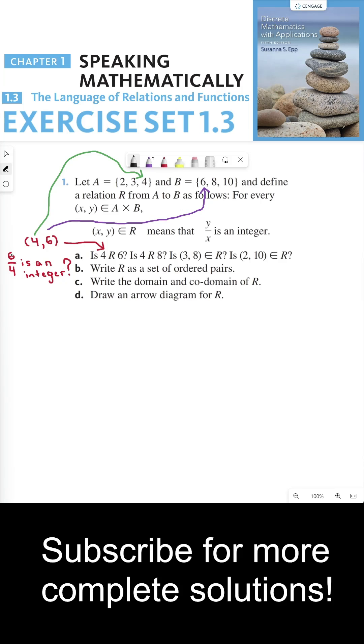So I wrote that in red over here. 6 divided by 4 is an integer. And that's false because 6 divided by 4 is 1.5 or 3 halves. That is not an integer. And so that means that this ordered pair is not in the relation, which means that 4 is not related to 6. So that's false.